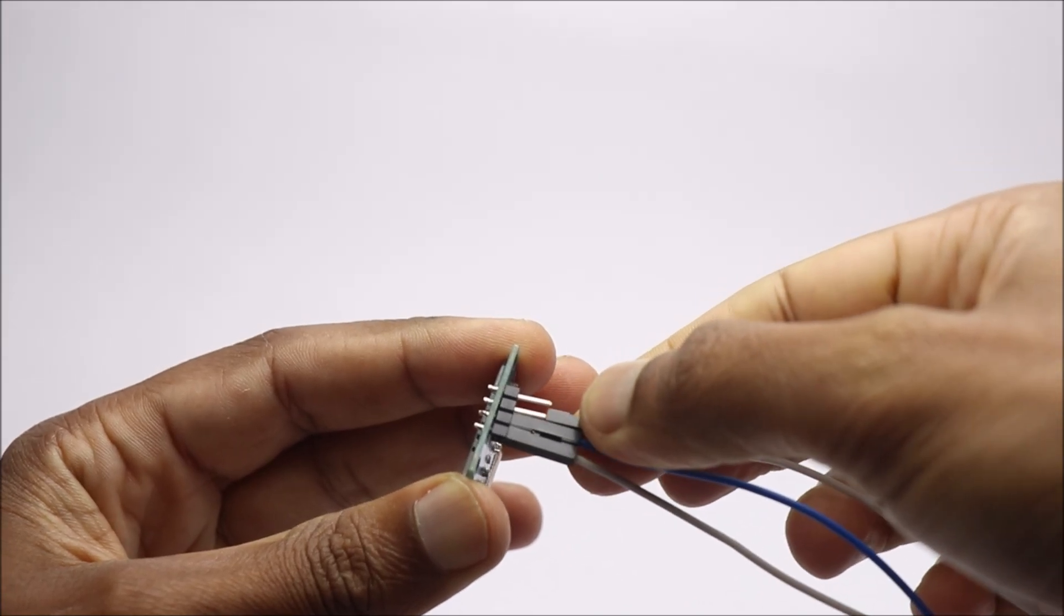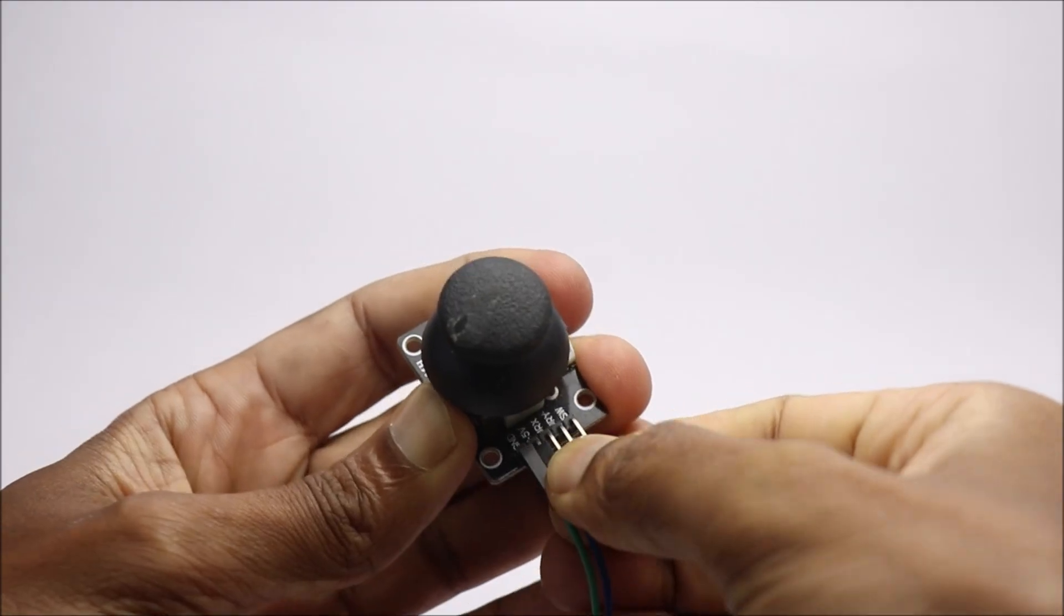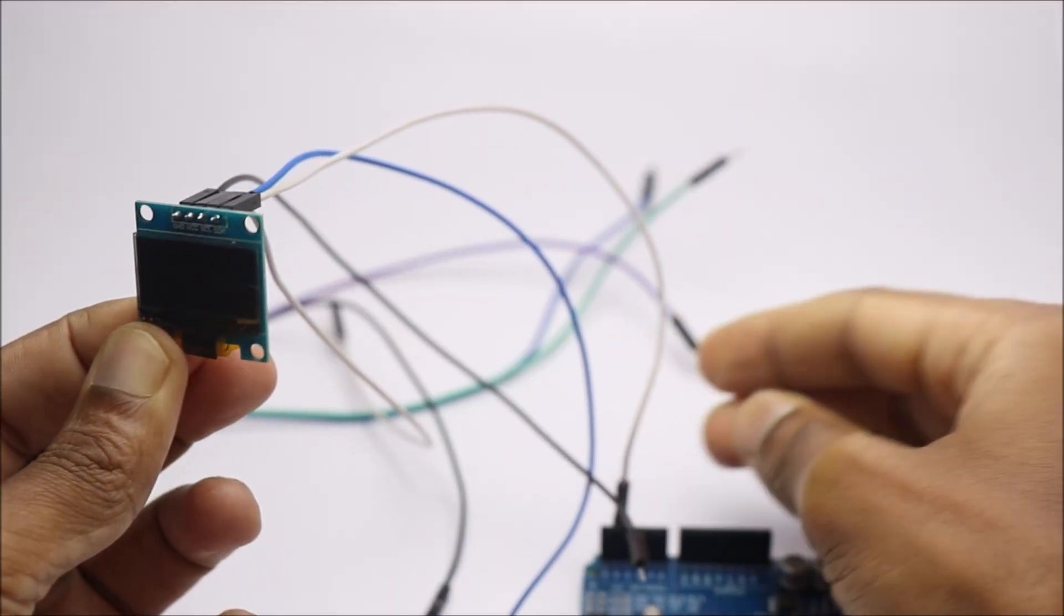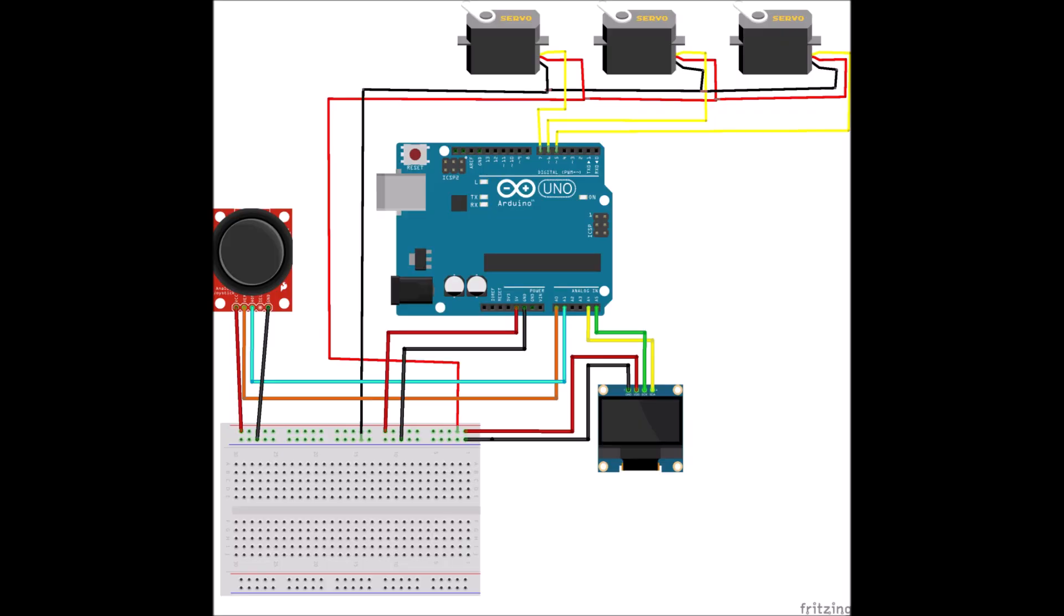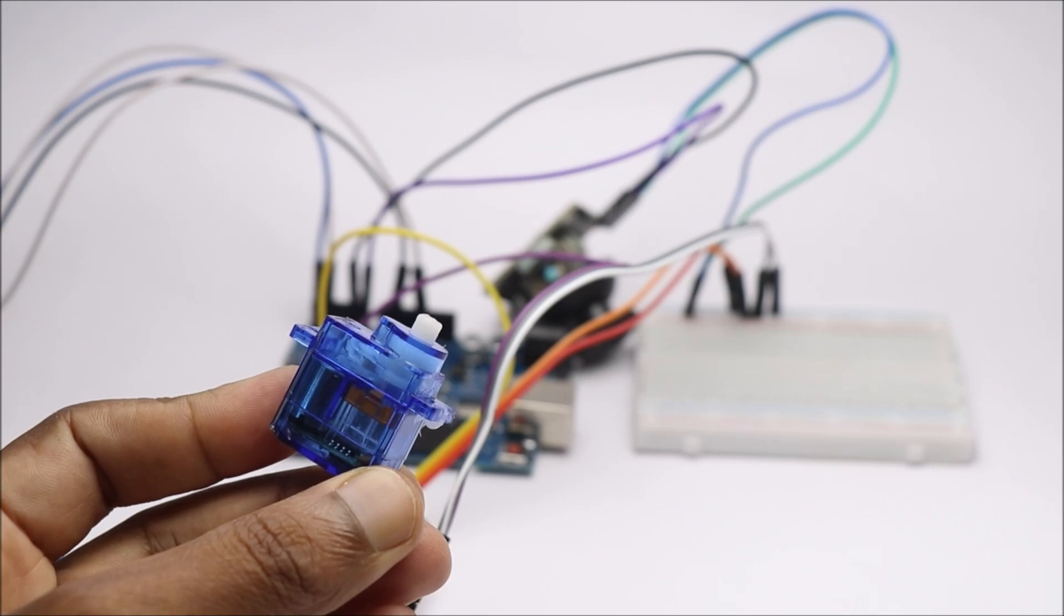To begin with, connect jumper wires to OLED and joystick module. Follow the circuit diagram to establish connection between the components.